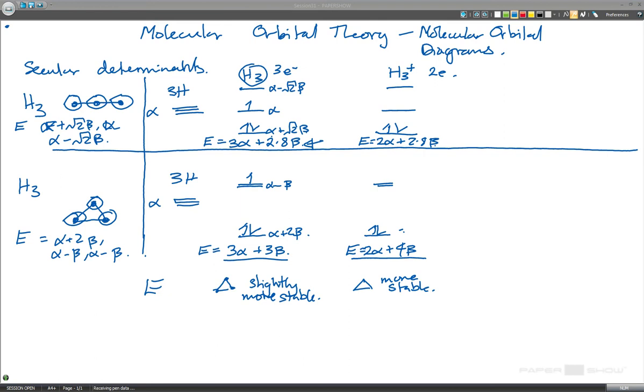If we go the other way, I make H3 minus. For the linear form, the energy is going to be 4 alpha plus 2.8 beta again. For the triangular form, put two electrons in here and two in this higher state here. Again, this is alpha plus 2 beta, but this is alpha minus beta. So now the energy here is equal to 4 alpha plus 2 beta.